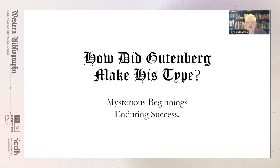Having the idea of movable printing letters was certainly a starting point, but until the suitable method for their production was found, the art of printing could not be realized. With this in mind, let's consider the subject: how did Gutenberg make his types?